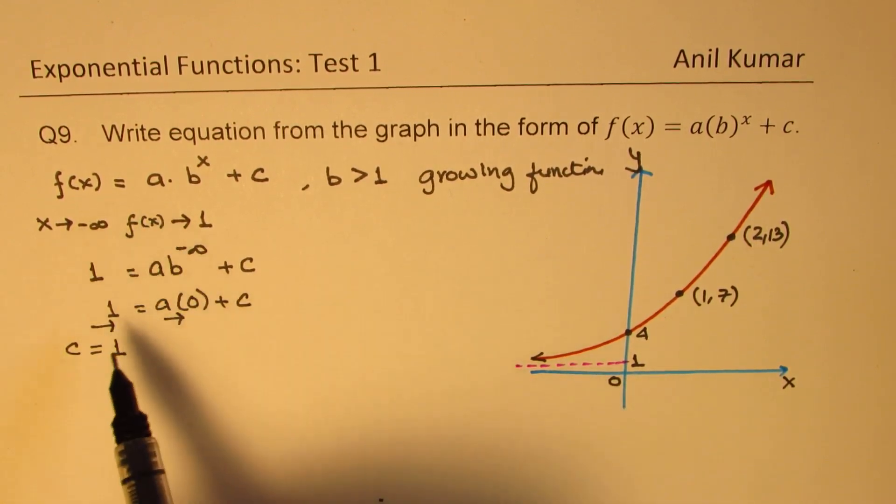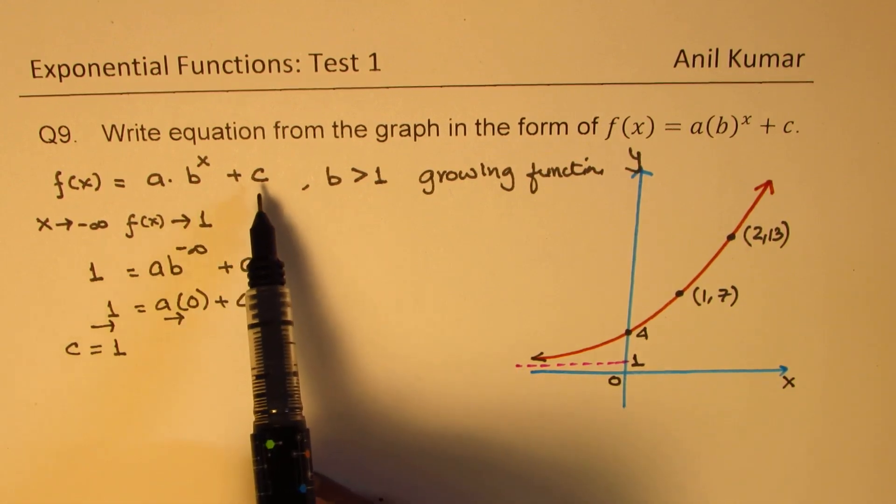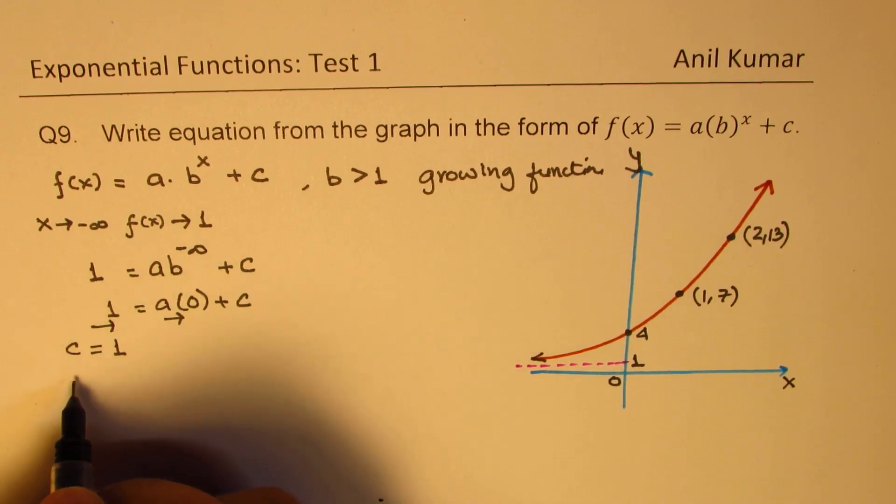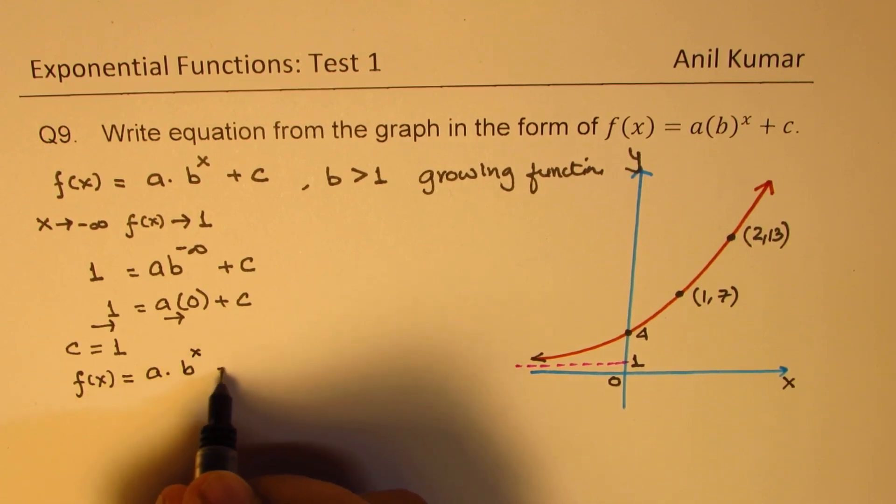So this is also a very important concept, straight from here, we can directly write the value of c. So that was to explain. So now we can write the function f(x) as equal to a times b to the power of x plus 1.